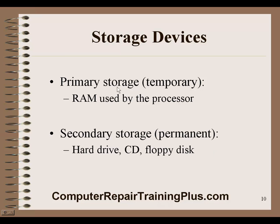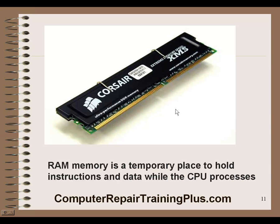Primary storage — also considered temporary storage — is your RAM, and it's used primarily by the processor. The processor moves information, data, and instructions in and out of the RAM very quickly. Secondary storage is what we call permanent storage: your hard drive, CD, floppy drive, external drives — anything that can store data on a permanent basis. Here's an example of a DIMM chip, which is RAM memory — a temporary place to hold instructions and data while the CPU processes.